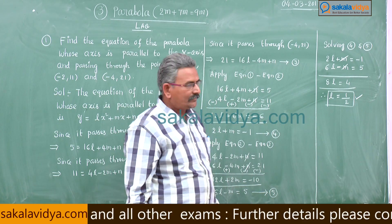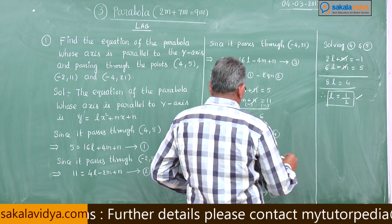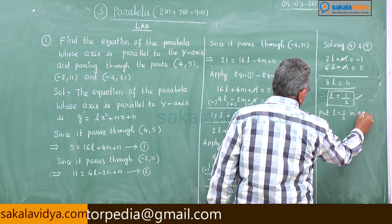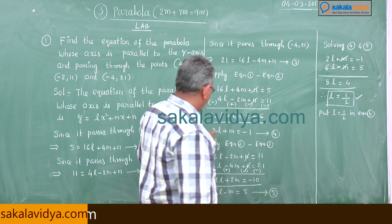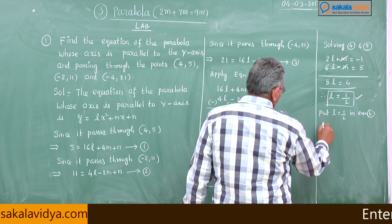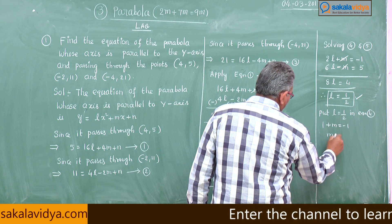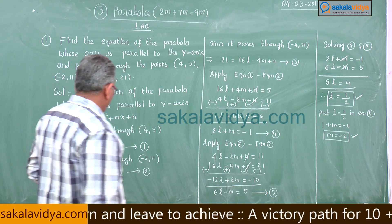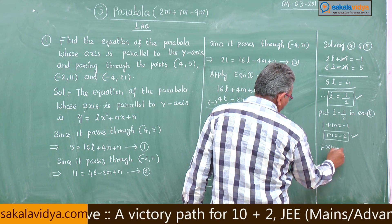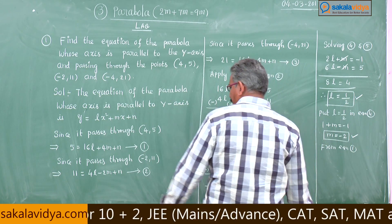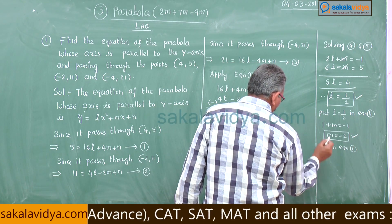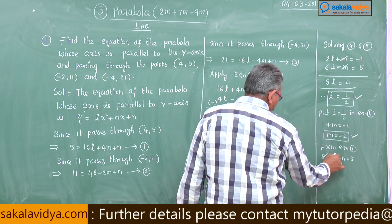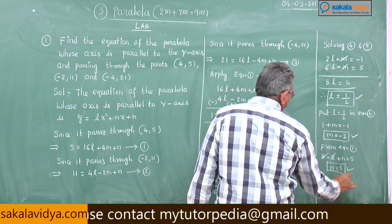With l = 1/2, substitute into equation 4: 2×(1/2) + m = -1, so 1 + m = -1, giving m = -2. From equation 1, substituting l and m: 16×(1/2) - 8 + n = 5, so 8 - 8 + n = 5, giving n = 5. Now we know l = 1/2, m = -2, n = 5.